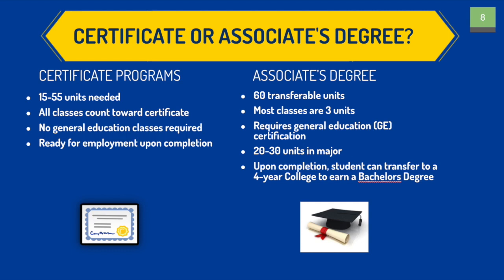Now let's talk about the difference between a certificate and an associate degree. Certificate programs need fewer units than an associate degree — students can receive a certificate with 15 to 55 units. All of the classes count toward the certificate and there is no need to take general education classes. Certificate programs prepare students for employment upon completion. Associate degrees need 60 transferable units. Most classes are about three units, and it requires general education classes — for example, math, English, and science — and about 20 to 30 units per major. Upon completion, students can transfer to a four-year university to earn a bachelor's degree.